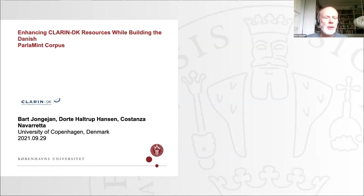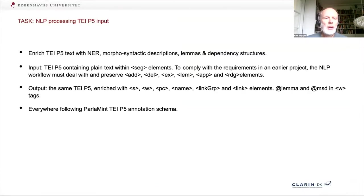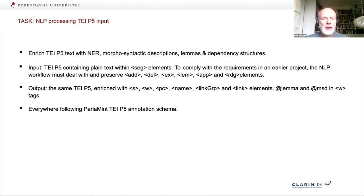Thank you. We three — me, Dorthe, and Kostanza — worked on the Danish Clarin-DK project for parliament. This talk is about the technical implementation of this work. Our task started with already TEI-P5 encoded input; one of us had made all the metadata in these TEI files. The main text was there, and what we had to add was named entities, morpho-syntactic descriptions, lemmas, and dependency structures. Everywhere, we had to follow the parliamentary TEI-P5 annotation schema.